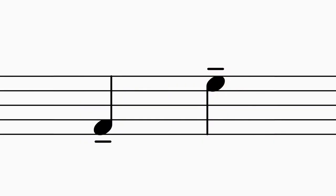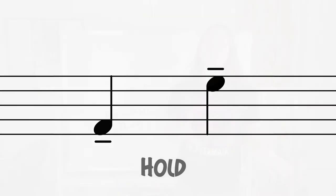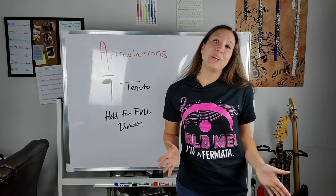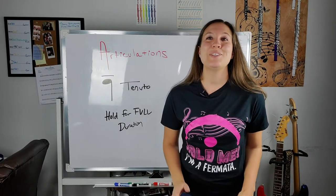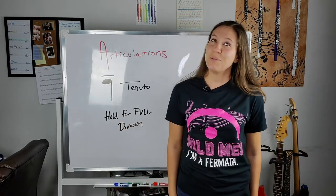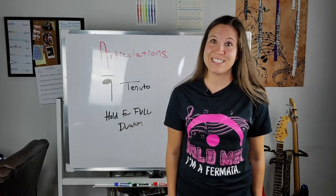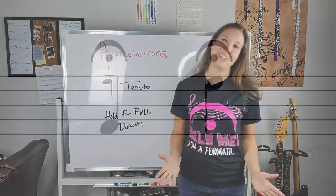Next, we have these lines either above or under the note. This line is tenuto. Tenuto is the opposite of staccato — it means to hold out the note for its full value. This one is pretty self-explanatory. Just make sure you hold the note out all the way. You probably don't want to sneak in a breath here since they want you to play the full duration of the note.